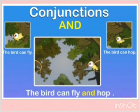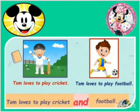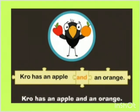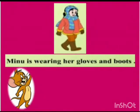The bird can fly. The bird can hop. How to join the sentences? The bird can fly and hop. Tom loves to play cricket. Tom loves to play football. Tom loves to play cricket and football. Crow has an apple and an orange. Meenu is wearing her gloves and boots — these two words are joined by adding the conjunction 'and'.